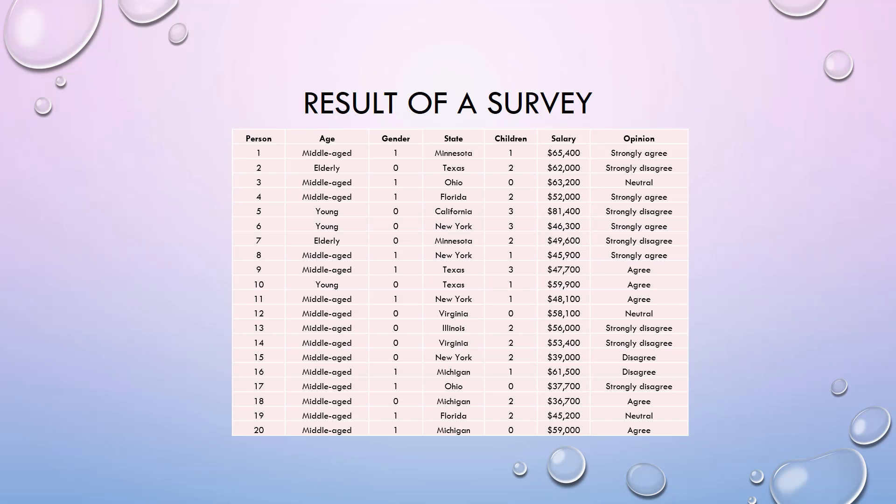Children and salary are both ratio data. And the last variable, opinion, is ordinal with five categories.